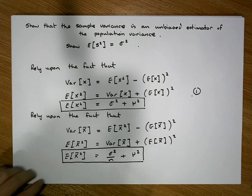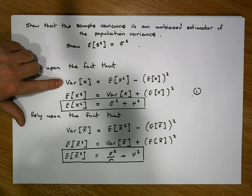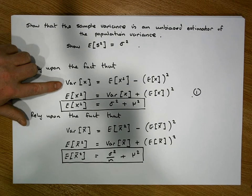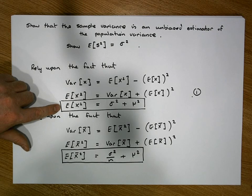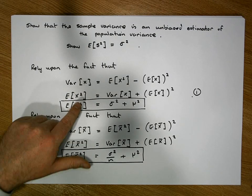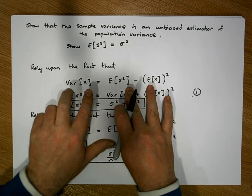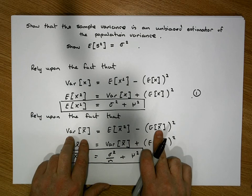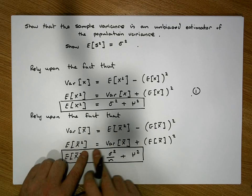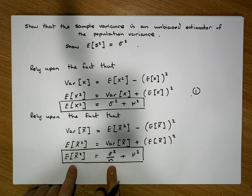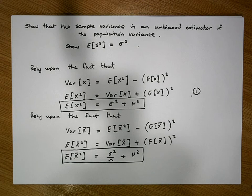We have previous videos showing this particular identity. From that identity we can derive the first expression, and when we let X equal X-bar we get the same identity across the sampling distribution of the sample mean, from which we can derive the second expression. So now we're ready to go.